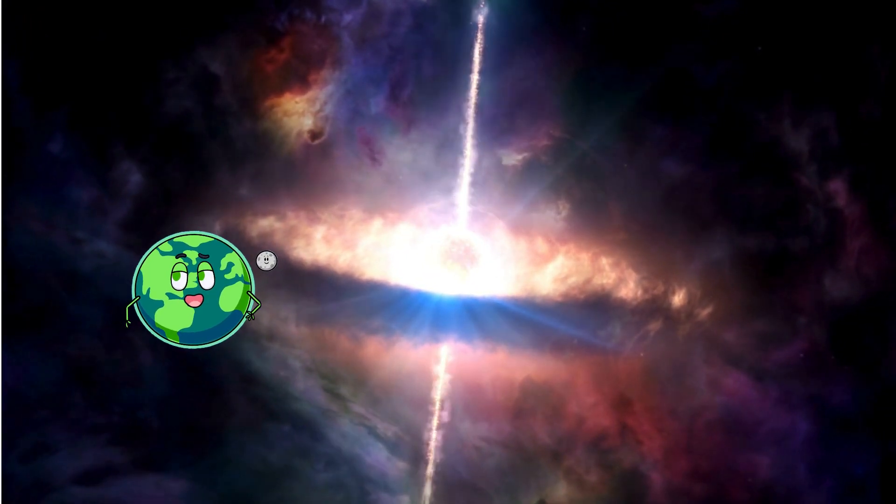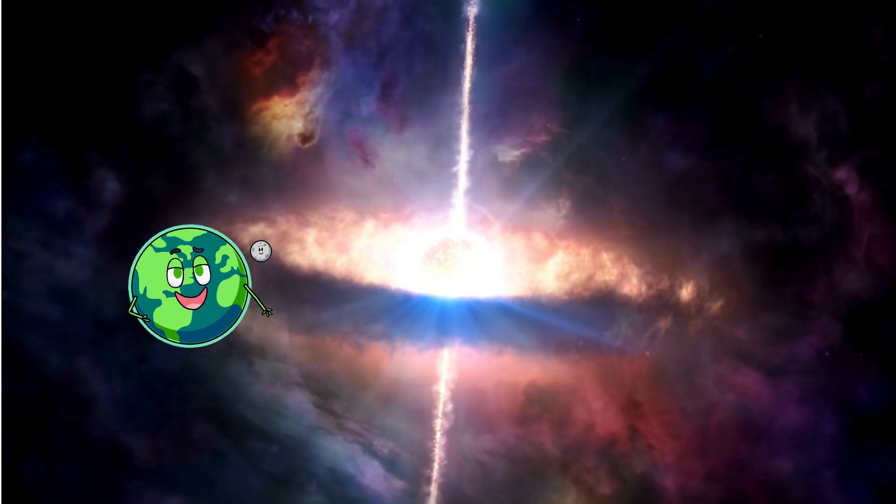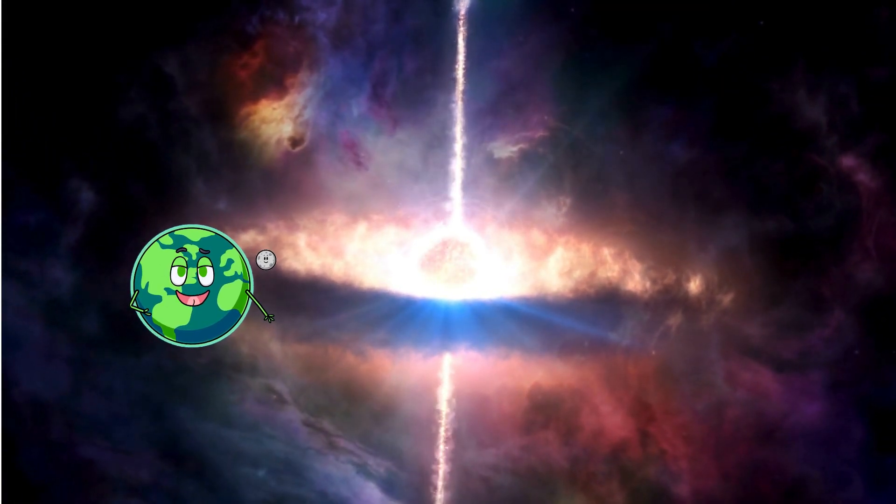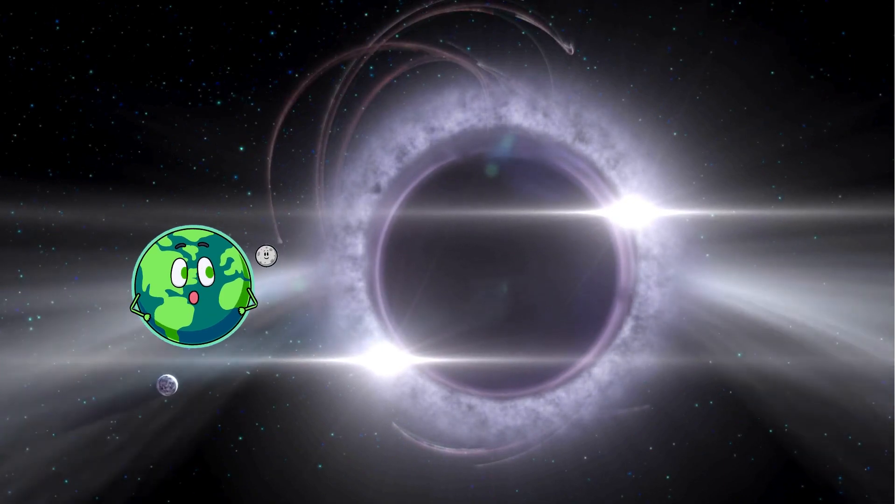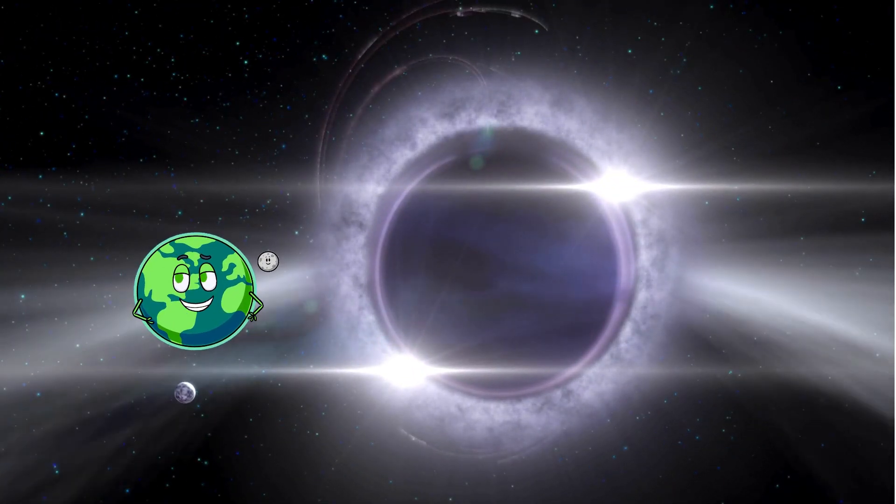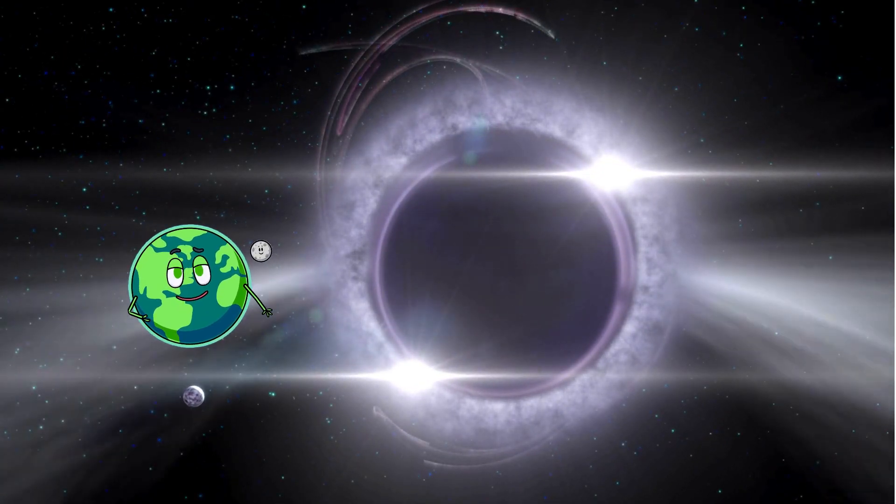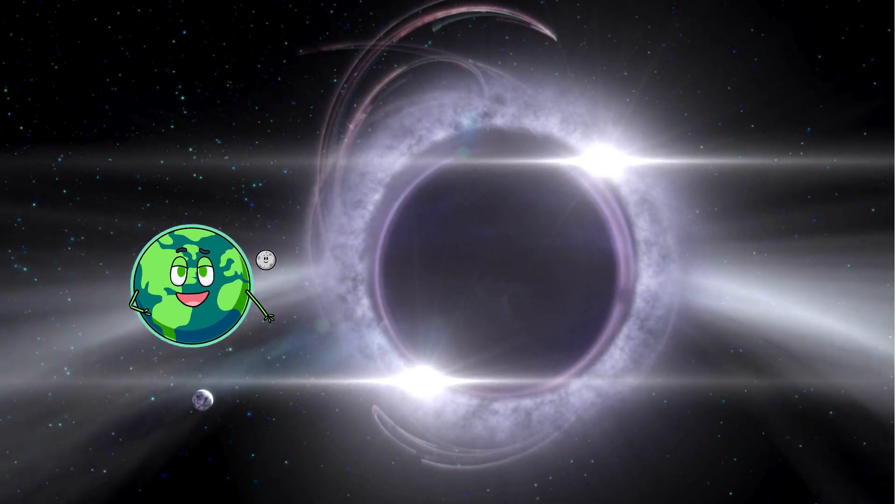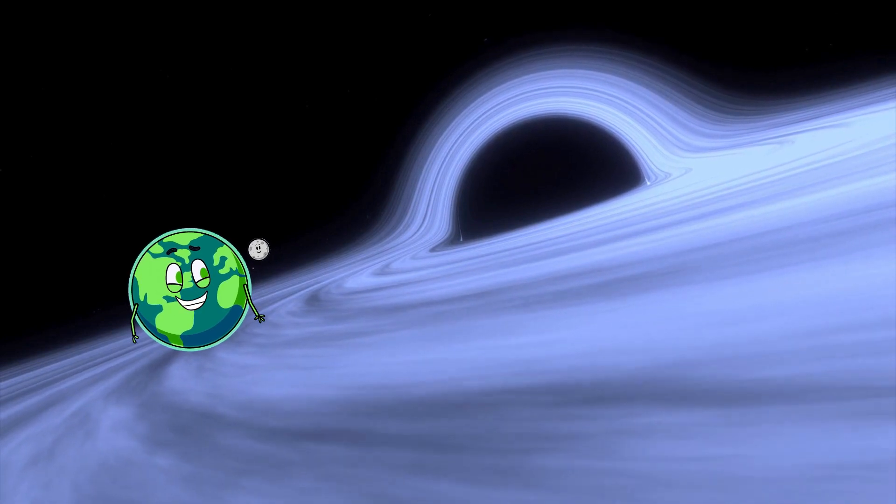Now, let's talk about the biggest black hole we know. It's called Ton-618, and it's a supermassive black hole. How big is it? Well, it's so massive that it's about 66 billion times the mass of our sun. Imagine 66 billion suns squished into one spot. That's really, really big.